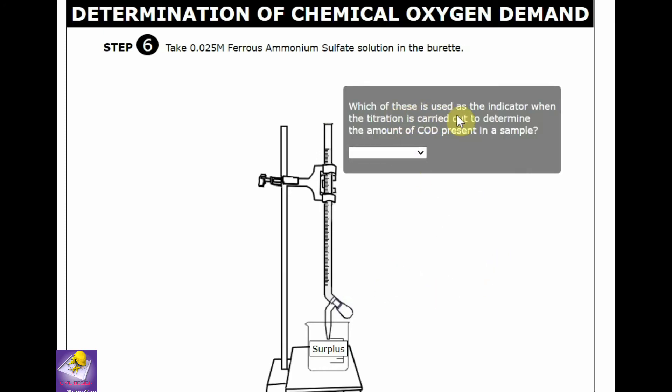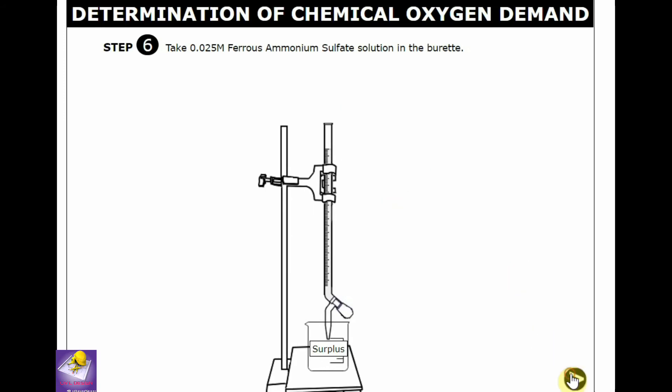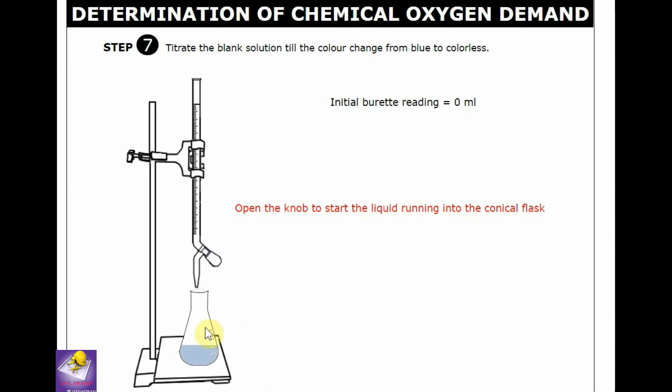Which of these is used as indicator when the titration is carried out to determine the amount of COD present in sample? The ferroin indicator. Now start the titration. Initial reading is 0. The titration is carried out till the color changes from blue to colorless.